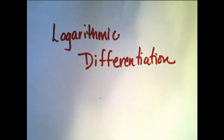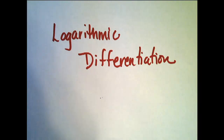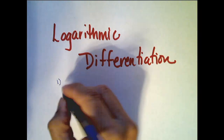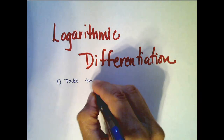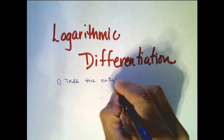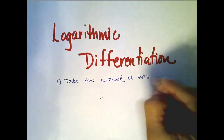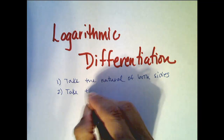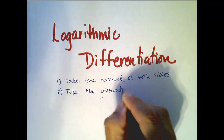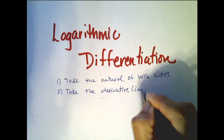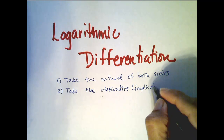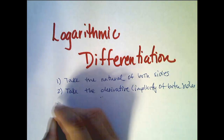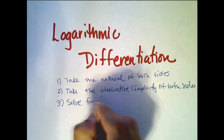Here we're going to look at a technique of differentiation called logarithmic differentiation. It has three simple steps. The first is to take the natural log of both sides. Then you're going to take the derivative implicitly of both sides. And then solve for y prime, or dy/dx.